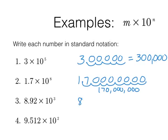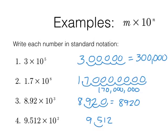For 9.512 times 10 to the 2nd, move the decimal point two places to the right — that's 951.2. Some of these aren't numbers you'd usually see in scientific notation, but it doesn't matter. You still follow the rules of conversion. Make sure you write the answer as a proper number, not trying to leave it in a hybrid form.